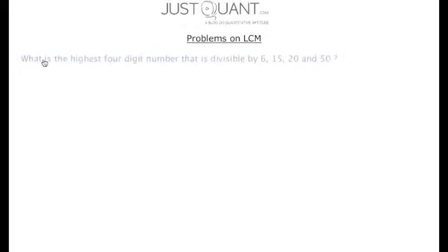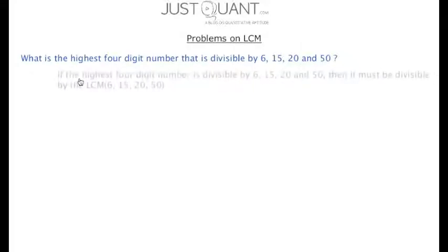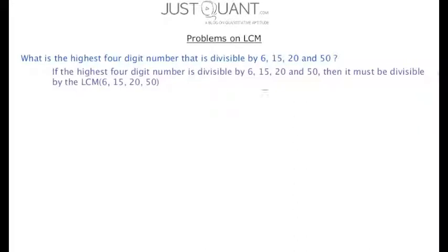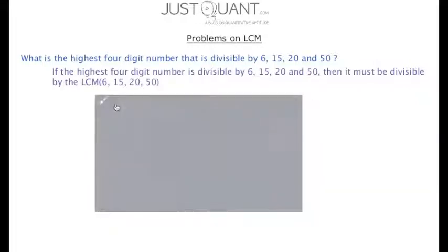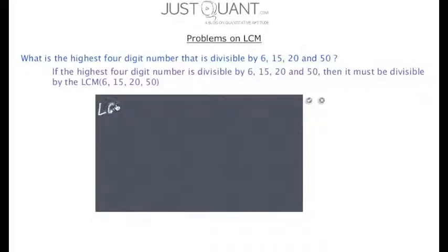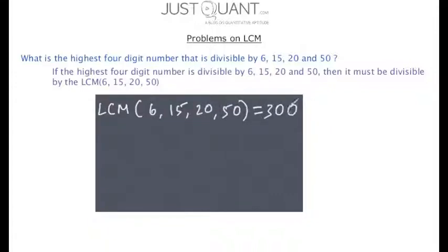Now, what is the highest four-digit number that is divisible by 6, 15, 20 and 50? If the highest four-digit number is divisible by 6, 15, 20 and 50, then it must be divisible by the LCM of those numbers. Hence the LCM of 6, 15, 20 and 50 is 300.